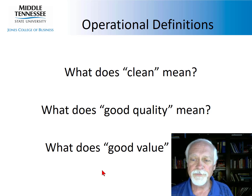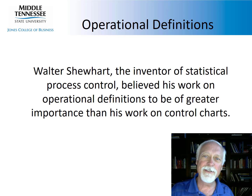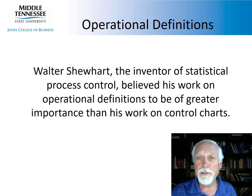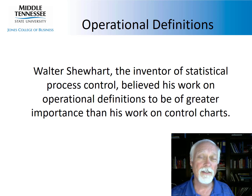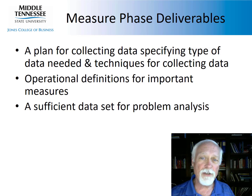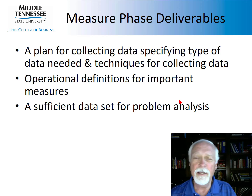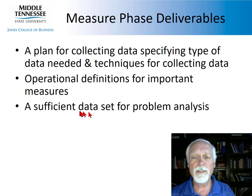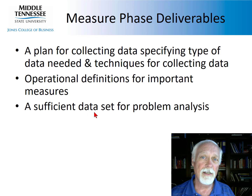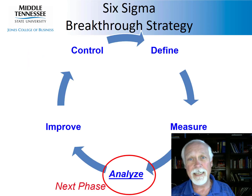We often use words like 'clean,' 'good quality,' or 'good value' without defining them, so we cannot measure them. Walter Shewhart invented statistical process control and the Plan-Do-Study-Act cycle — the foundation of continuous improvement — and he said operational definitions were of greater importance than control charts. That's saying something. Our deliverables from the measure phase include: a plan for collecting data specifying the type of data needed and collection techniques; operational definitions for important measures that aren't yet clear; and a sufficient dataset for problem analysis. Next up is the analyze phase.